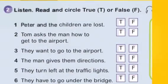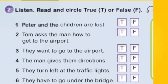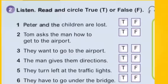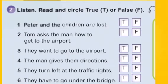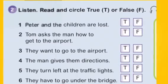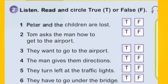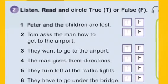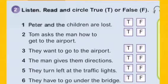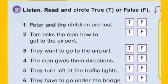Unit 8, Lesson one, Activity two — Listen, read and circle true or false. Excuse me. Yes. Where's the airport? Turn right after the traffic lights. And go across the bridge. Drive straight on. And the airport is on the left. Thank you. So left after the traffic lights? No, turn right. Oh yes, turn right. Let's go.